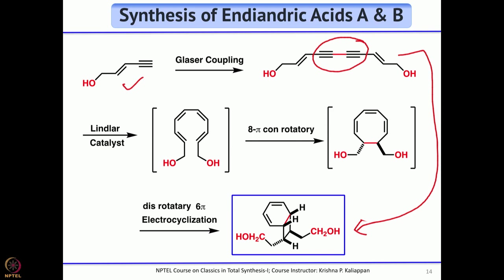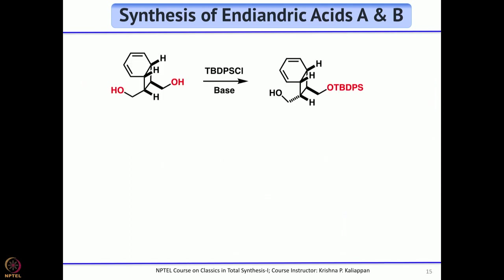Having obtained the bicyclic compound with two CH₂OH groups on opposite faces, the next step was to differentiate these two primary alcohols. The more exposed CH₂OH was expected to be selectively protectable, but in reality selectivity was poor — both hydroxyl groups could be protected by TBDPSCl.